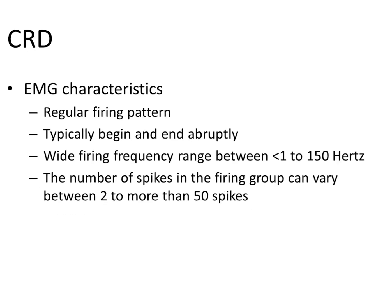EMG characteristics include a regular firing pattern. They typically begin and end abruptly. They have a wide firing frequency range between less than 1 to 150 Hz, and the number of spikes in the firing group can vary between 2 to more than 50 spikes.